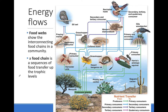Each level or energy transfer represents a trophic level. A food chain is a single sequence that shows the direct transfers of energy through trophic levels. A food chain begins with a single producer, the prickly pear cactus, that is eaten by an herbivore, the desert kangaroo rat.